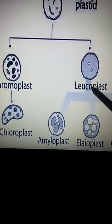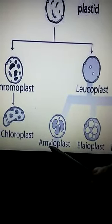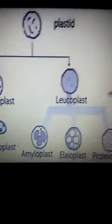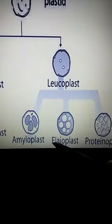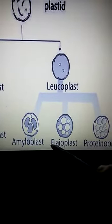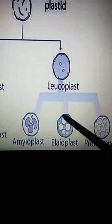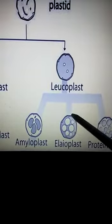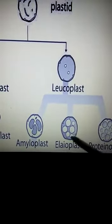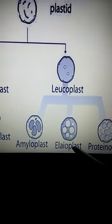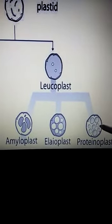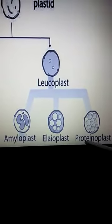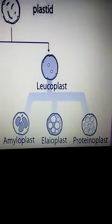The leukoplast, or colorless plastid, can be of different types. The kind that stores starch is known as amyloplast. The next type is elaioplast, which stores oils or fats. The next one stores proteins and is therefore named proteinoplast or proteoplast.